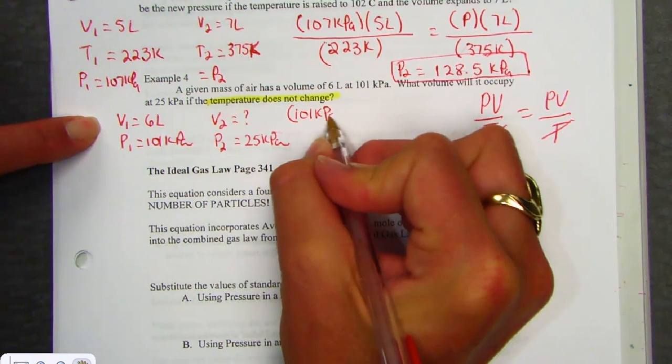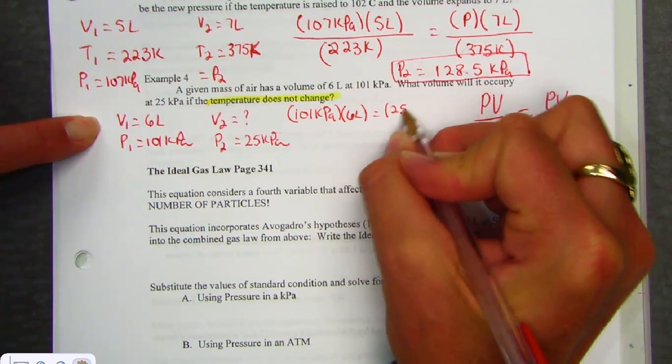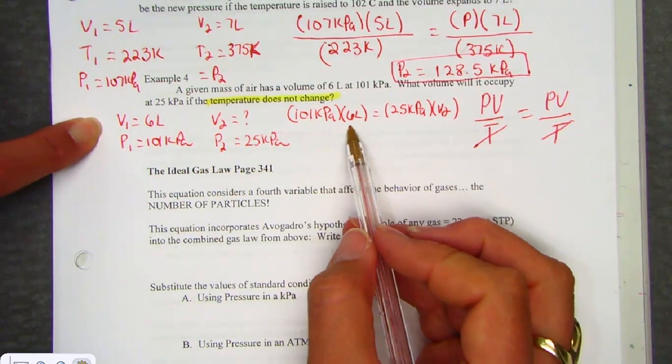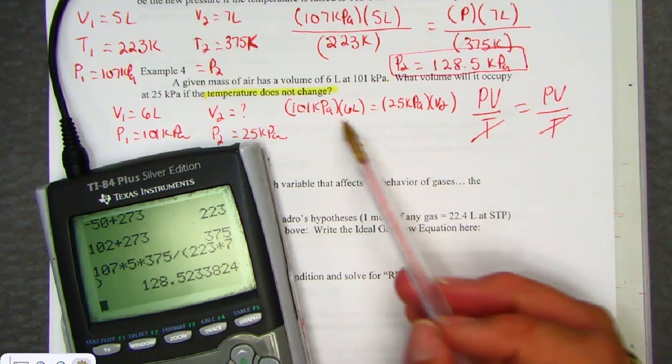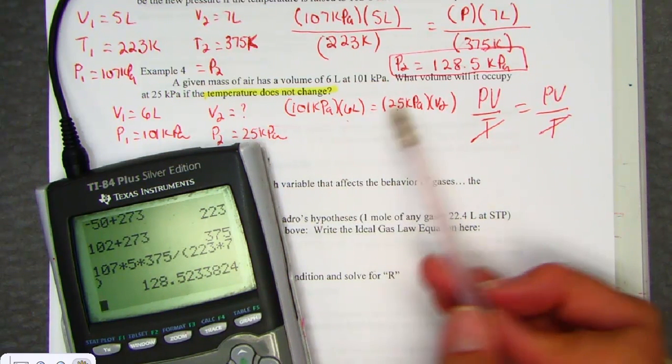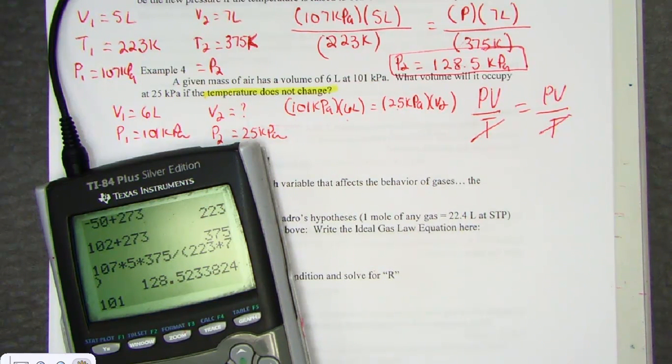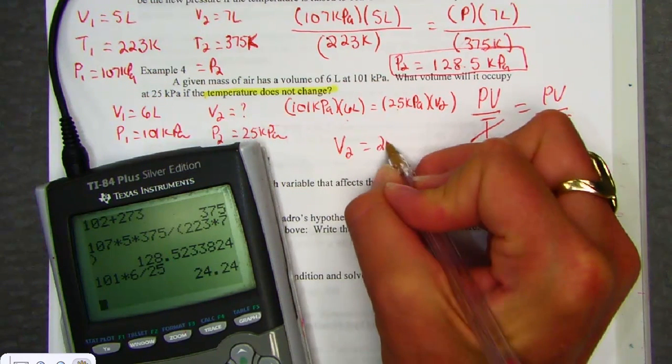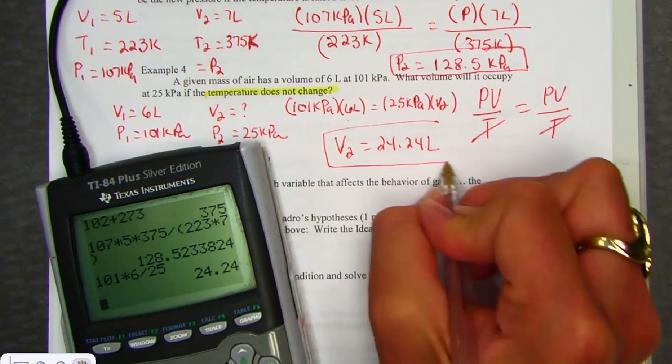Our units for pressure match, so we're good to just plug in. Our pressure one times volume one divided by our second pressure, and we'll pull out the new volume. Knowing that pressure went down, our volume, I suspect, goes up. So I'm looking for a value bigger than six. One-oh-one times six, divide by 25, and our new volume, 24.24. Put a liter in so the liter comes out.